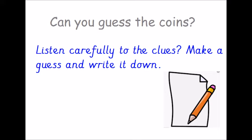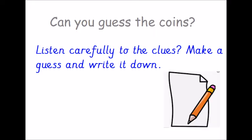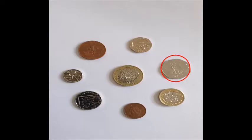The coin I'm thinking of is small and a brown colour. Which one do you think it is? It was the 1p coin. Did you get it right? This coin is silver, large and has seven straight sides. It was the 50p coin. Did you get it right?